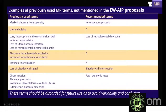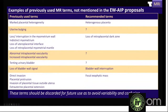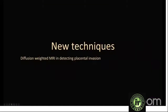These are the previously used terms and the recommended standardized terms. Marked placental heterogeneity is now called heterogeneous placenta. Uterine bulging is described as placental bulge. Several older descriptions for loss of retroplacental dark zone should be consolidated. Abnormal intraplacental vascularity is now called abnormal vascularization of the placental bed. The term tenting of the bladder wall is no longer used — replaced by bladder wall interruption and focal exophytic mass. These old terms should be discarded in favor of the new standardized terminology.